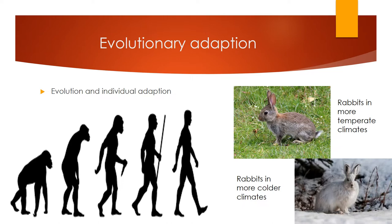Another property of life is evolutionary adaptation. Sometimes this can take many years, such as humans coming from apes, or sometimes it can be fast. In regards to rabbits, they're actually adapting to their environment, so it means it's a pretty quick adaptation. For example, a rabbit in a more temperate climate will have a more brownish color, and a rabbit in a colder climate will actually have white fur.